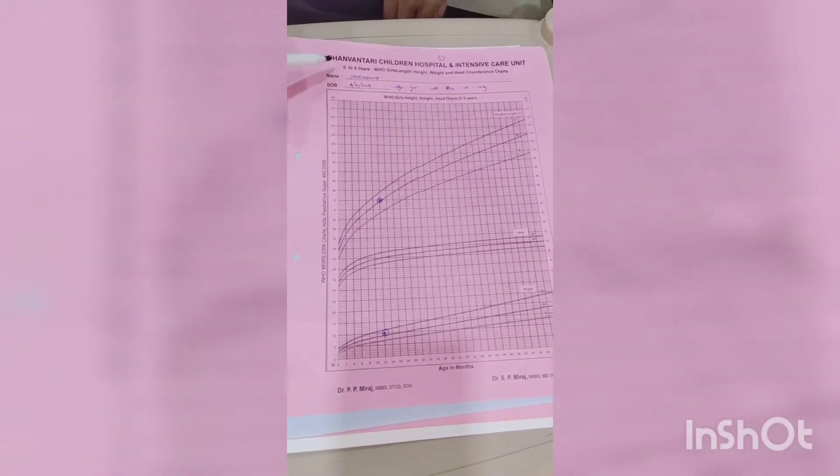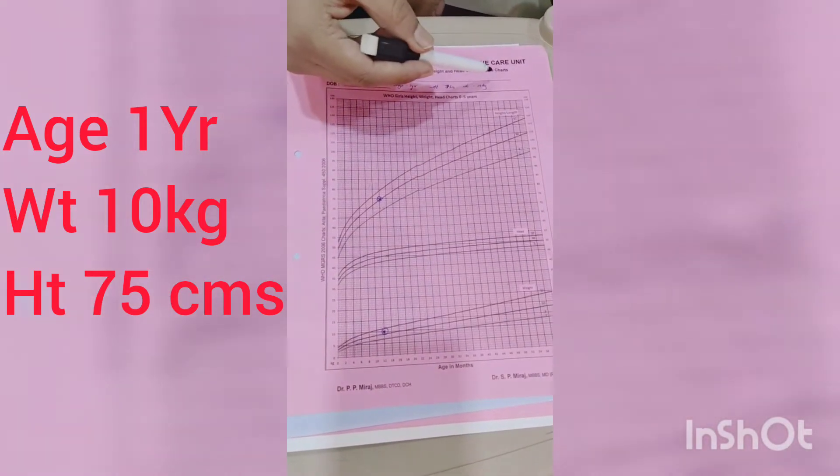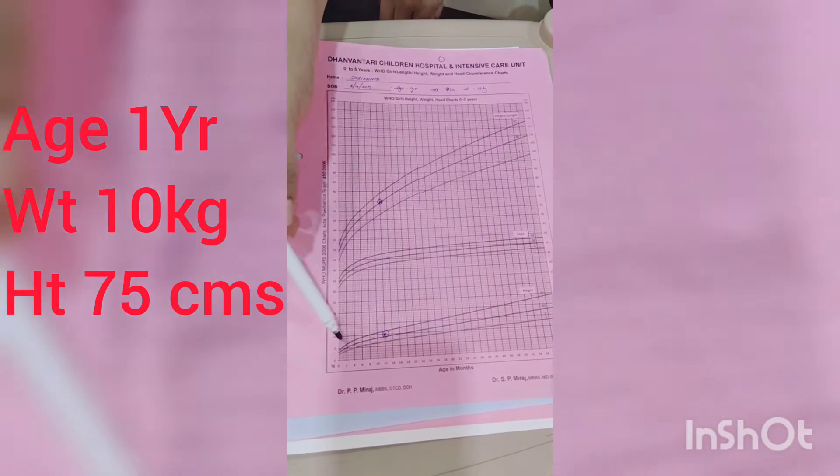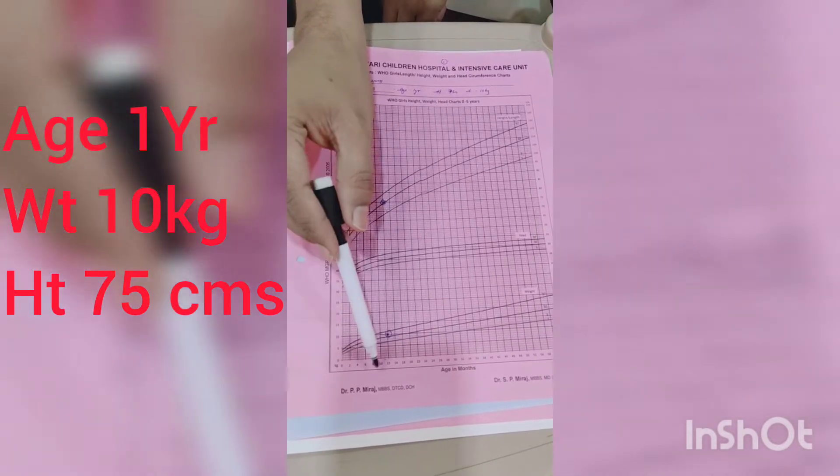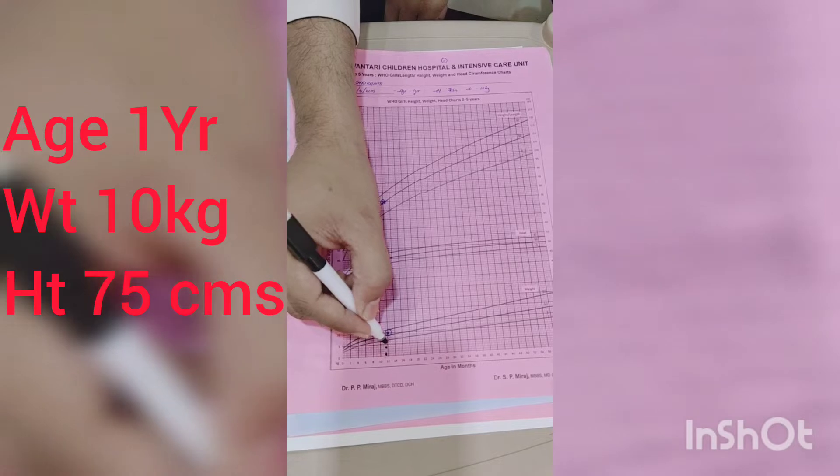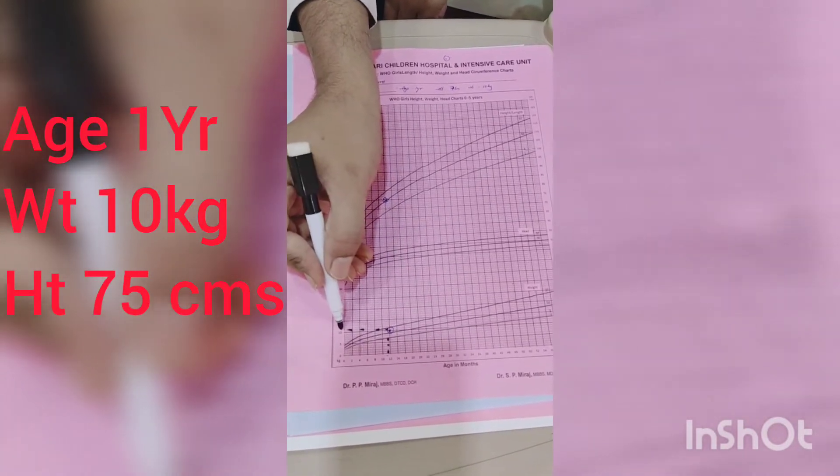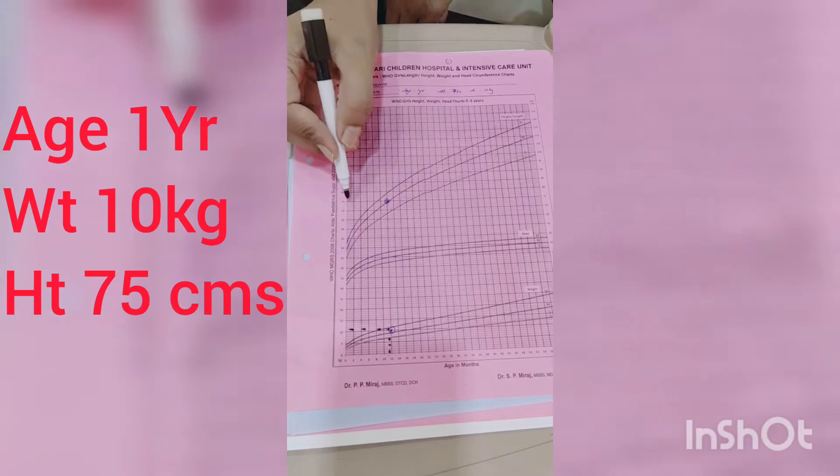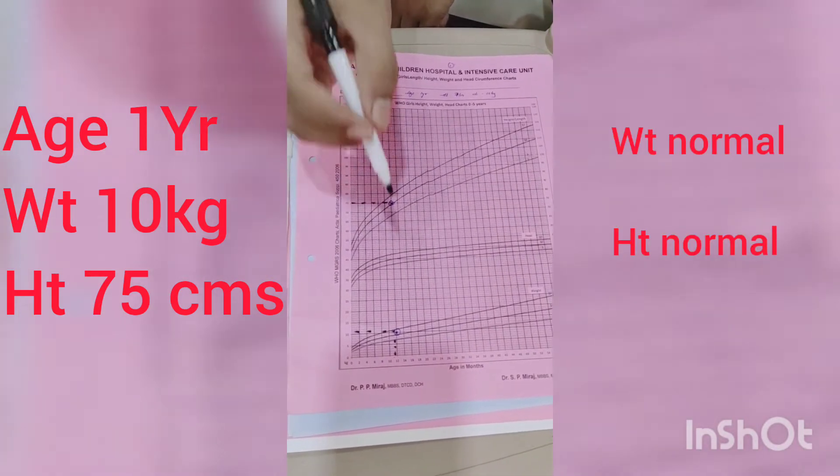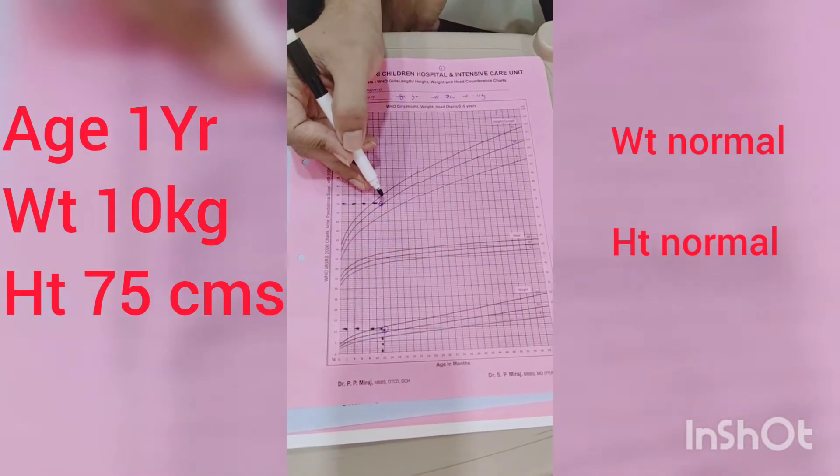Now let's take example number one. This is our kid named Shrikan, who is a one-year-old child. His height is 75 centimeters and his weight is 10 kg. If we plot his weight at 12 months, which is one year, and 10 kg, when they meet here, you can draw a perpendicular. At 10 kg for one year, he is well within normal. Similarly, his height is 75 centimeters. For one year, he is on the 50th percentile, which is normal. So this is a normal child.